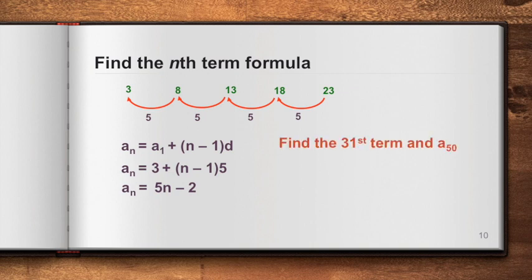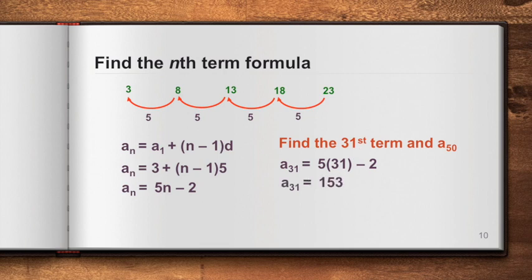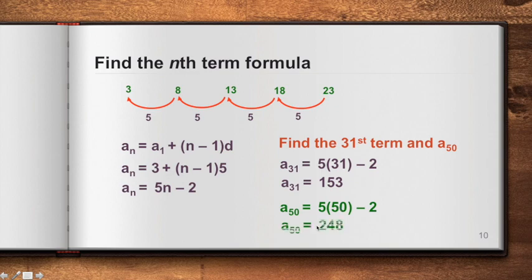Using this formula, we can find any term. For the 31st term: a sub 31 equals 5 times 31 minus 2, giving us 153. So 153 is the 31st term of this sequence. For the 50th term: it equals 5 times 50 minus 2, giving us 248. That is the 50th term in this arithmetic sequence.